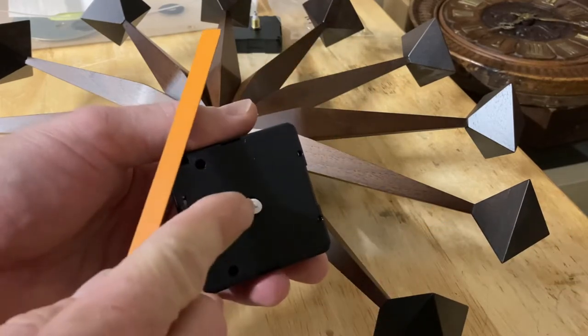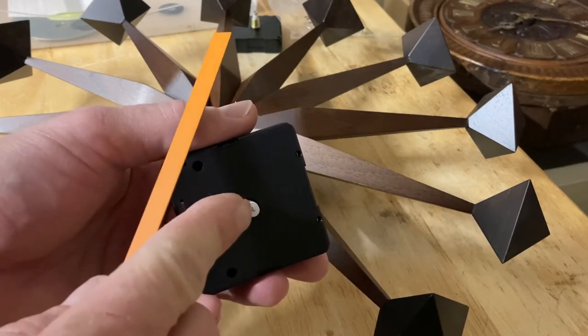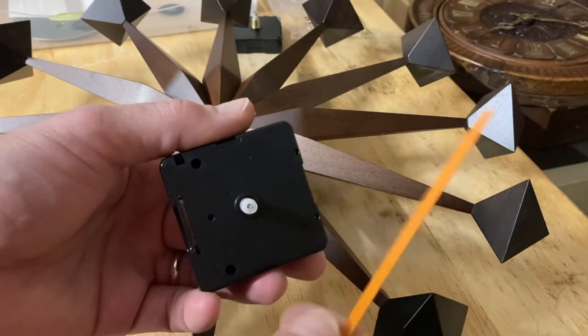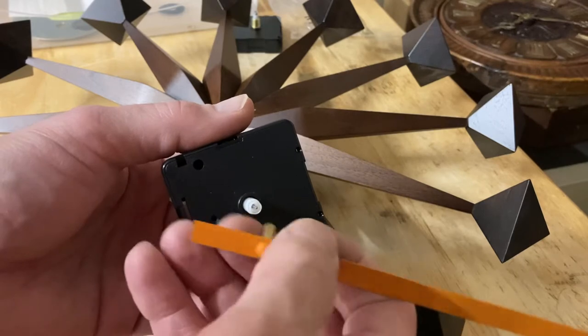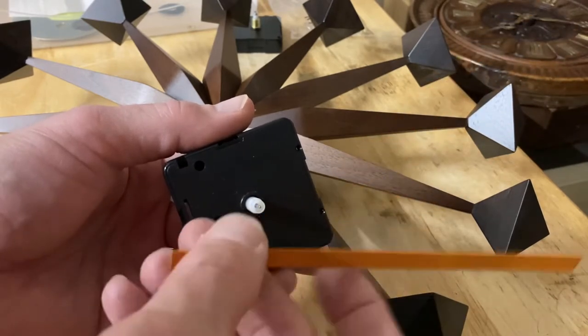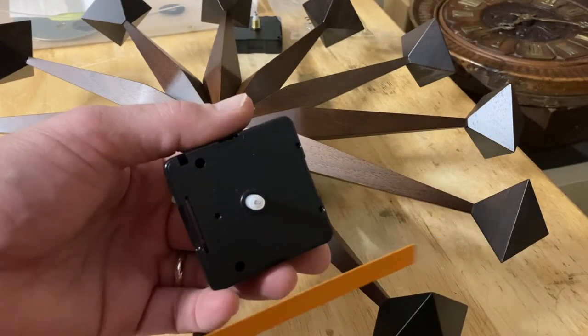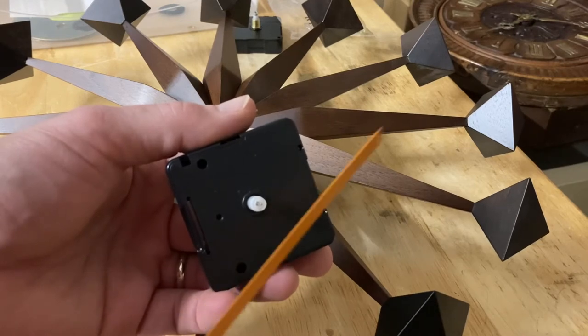But what happened is the plastic on the inside cracked, and so it would not hold the shaft—this metal shaft—tight, so the hand was falling basically. So essentially this movement is no longer going to work and hold these hands tight, and I can't replace or repair that.